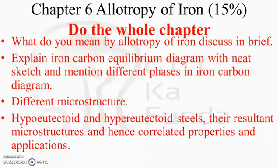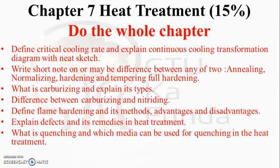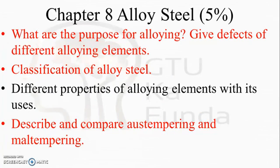Chapter 8 is Alloy Steel, which contains five percent of weightage. Key questions include: what are the purposes of alloying; give effects of different alloying elements; classification of alloy steel; different properties of alloying elements with their uses; and describe and compare austempering and martempering. Austempering and martempering are important topics in this chapter. While it carries only five percent, we cannot neglect any chapter from the syllabus.